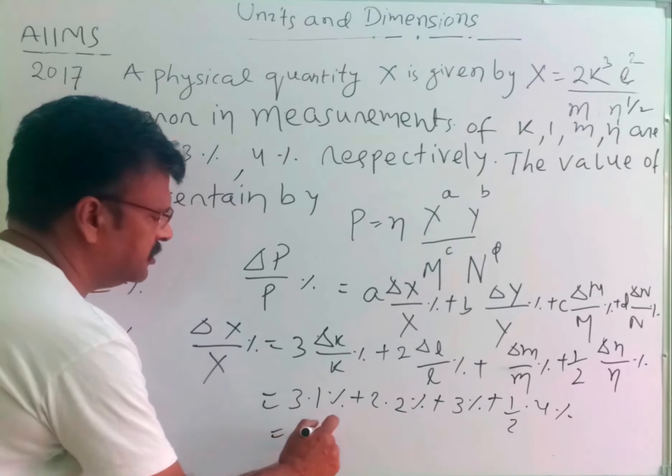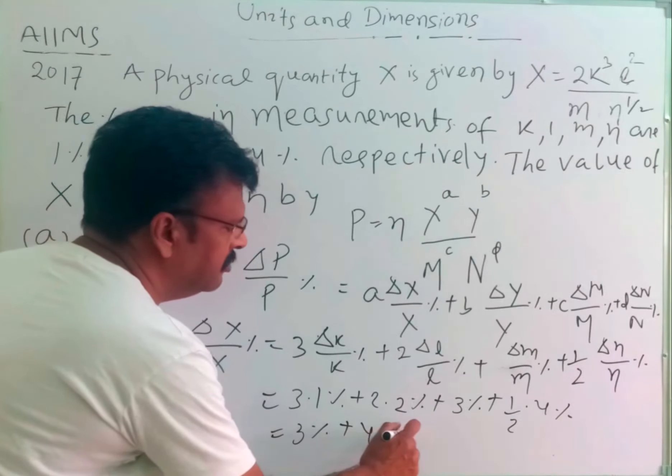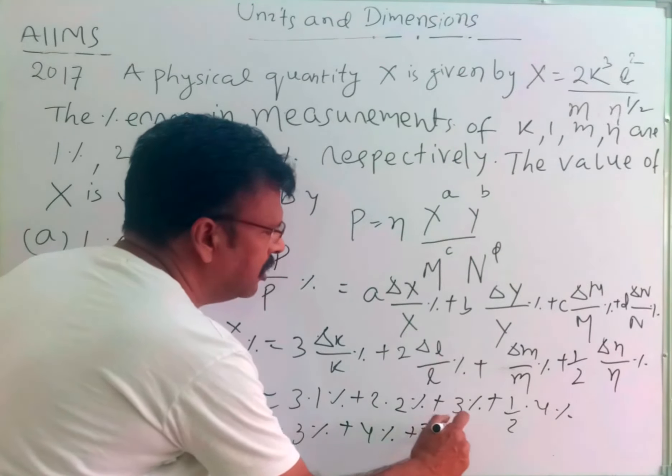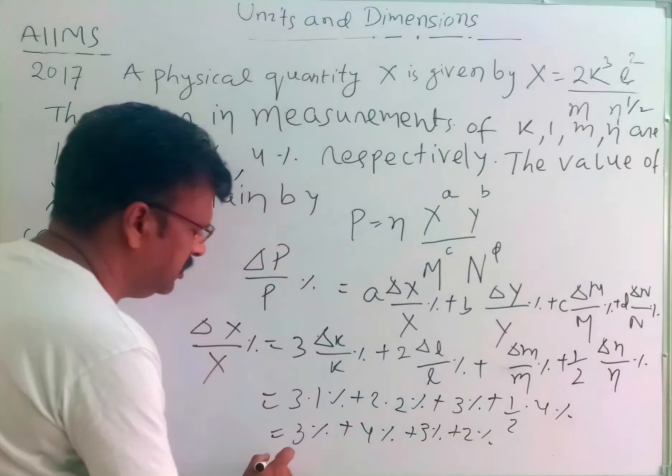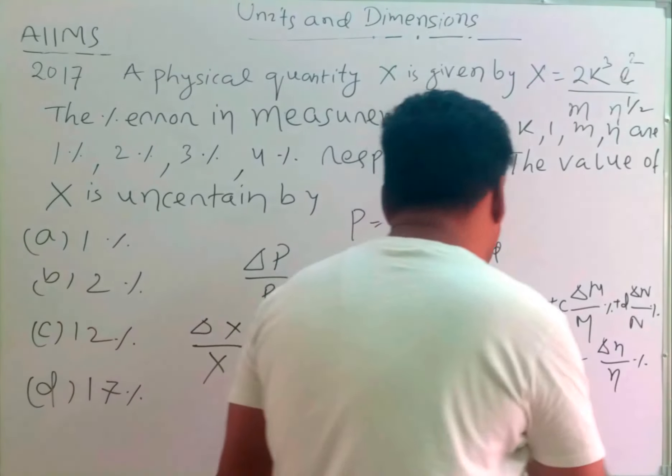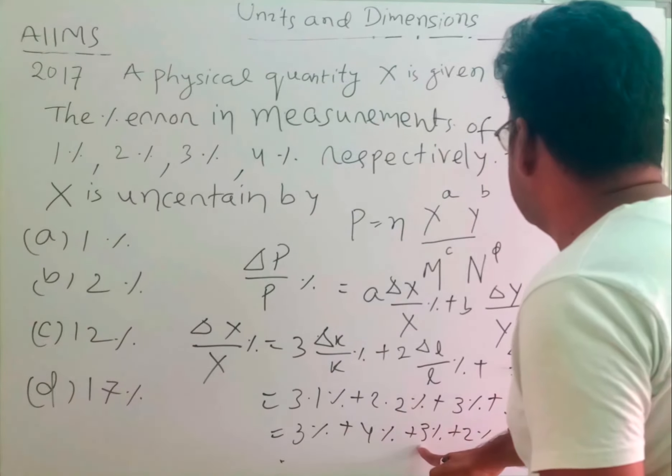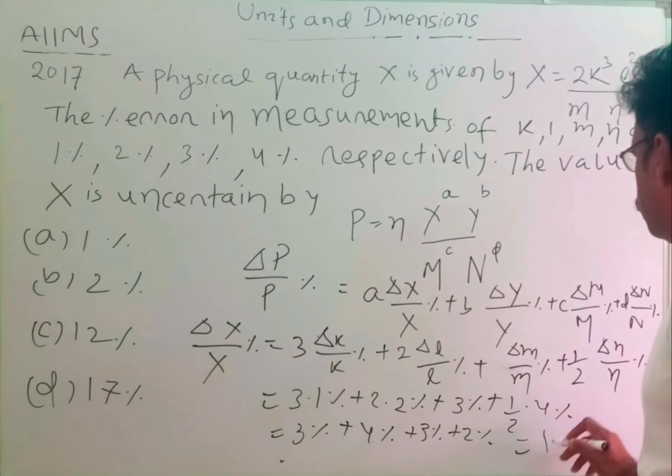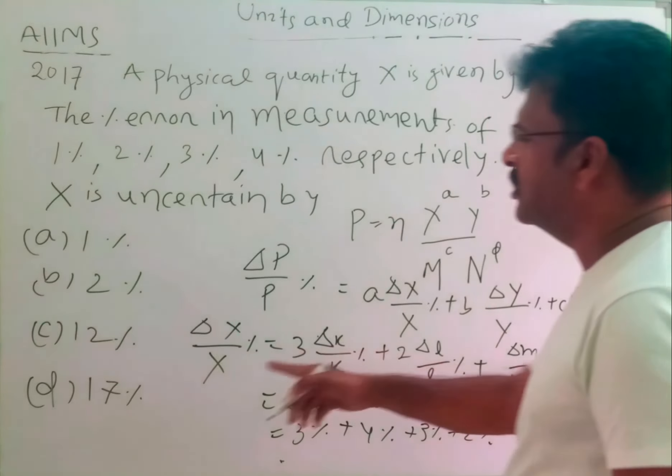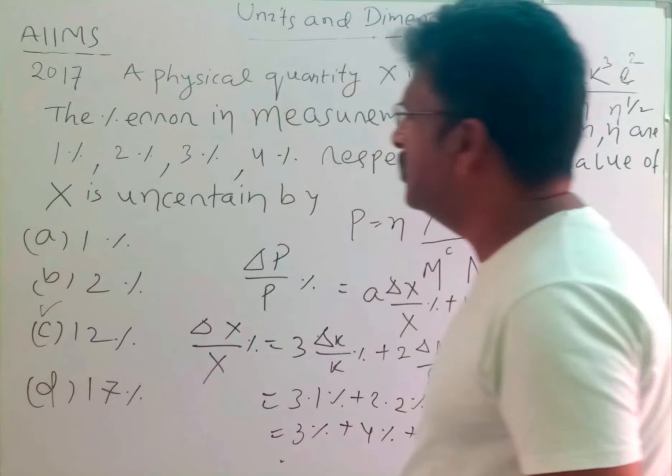So this becomes 3% plus 4% plus 3% plus 2%, which means 3, 4, 7, 3, 10 plus 2, 12%. Okay students, hence option C is correct.